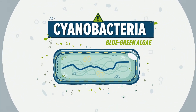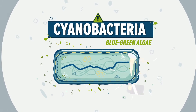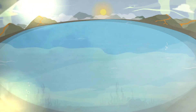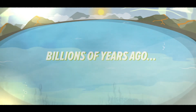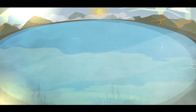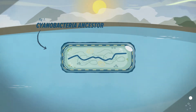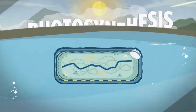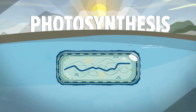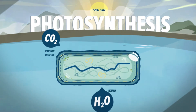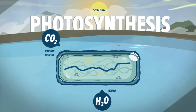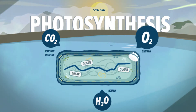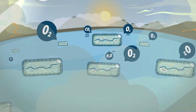Cyanobacteria, or blue-green algae, were the first successful oxygen-producing lifeforms on our planet. Billions of years ago, before the Earth had an oxygenated atmosphere, cyanobacteria's ancestors exhibited a new ability – photosynthesis. Harnessing sunlight, carbon dioxide and water, these early blue-green algae were able to produce sugars for internal energy and released oxygen, changing the planet's atmosphere forever.